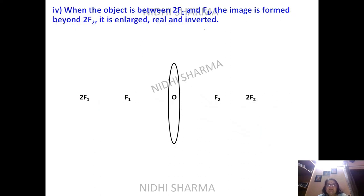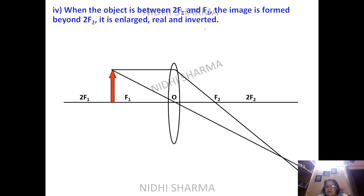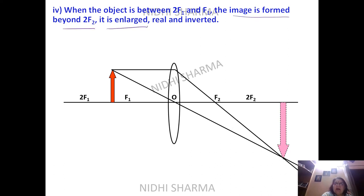The fourth case: when the object is between 2F1 and F1, the image is formed beyond 2F2. The parallel ray passes through focus; the ray through optical center diverges accordingly. The image formed beyond 2F2 is enlarged, real, and inverted.